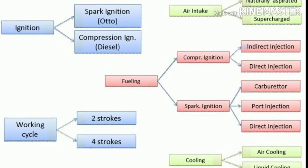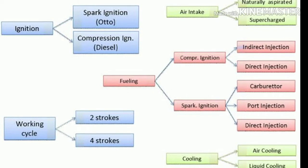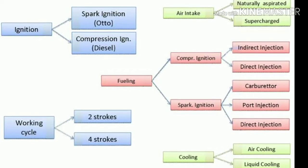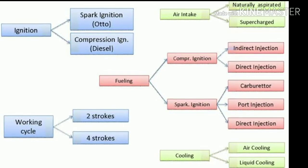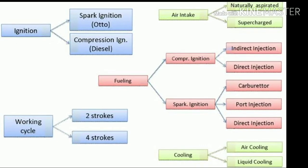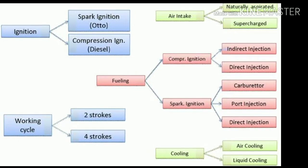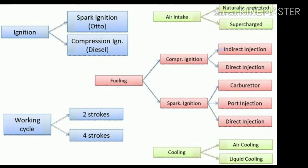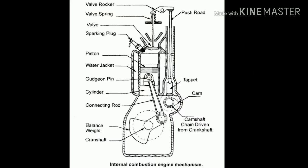The IC engine is basically divided according to five different criteria. First, according to ignition: spark ignition (petrol) and compression ignition (diesel). Second, according to working cycle: two-stroke and four-stroke. Third, according to fueling: compression ignition is divided into indirect and direct ignition, while spark ignition is divided into carburetor, port, and direct ignition. Fourth, according to cooling: air cooling and liquid cooling. Fifth, according to air intake: naturally aspirated and supercharged.